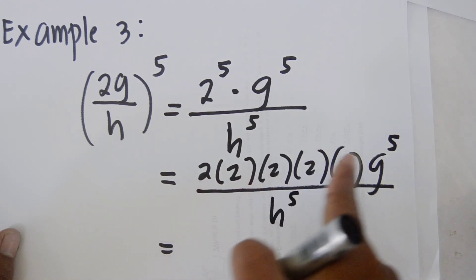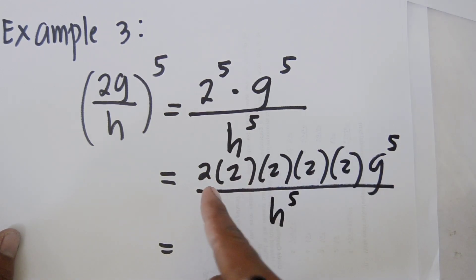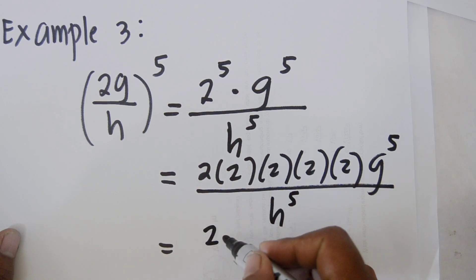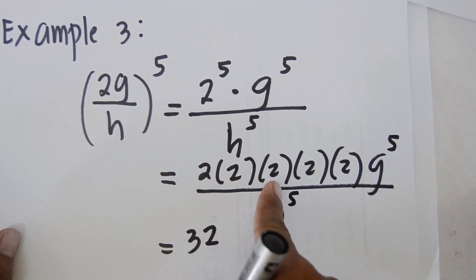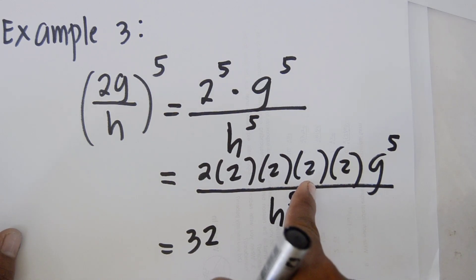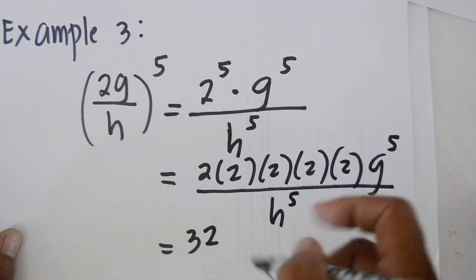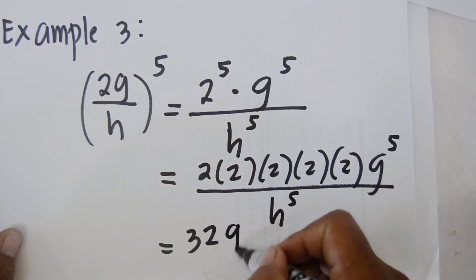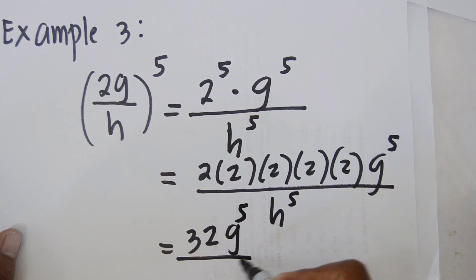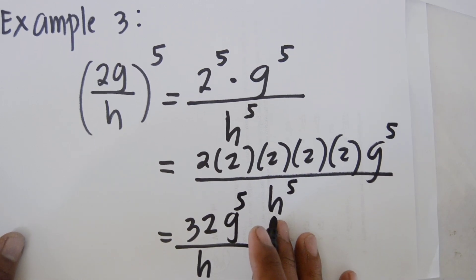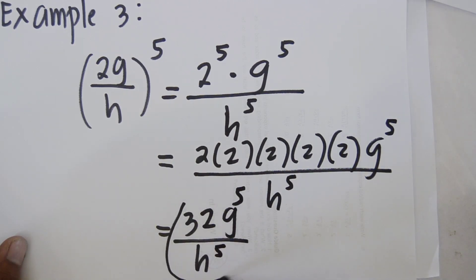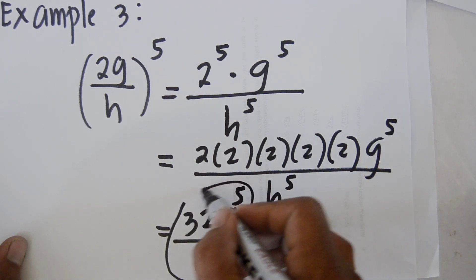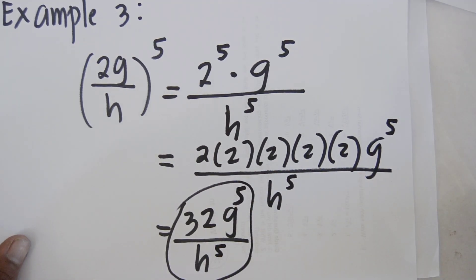2 raised to the power of 5 equals 32. So we have 32 times g to the power of 5 over h to the power of 5. That is our final answer.